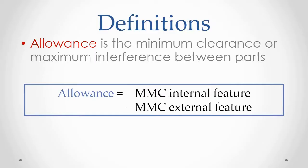We use the MMC to calculate the allowance between assembled parts. In a clearance fit, the allowance refers to the minimum amount of clearance between the two parts. In an interference fit, allowance refers to the maximum interference between the parts. To calculate the allowance between two parts, we subtract the MMC of the external feature from the MMC of the internal feature.